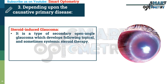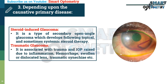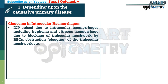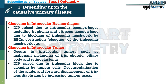Steroid-induced glaucoma — a type of secondary open angle glaucoma which develops following topical and sometimes systemic steroid therapy. Traumatic glaucoma — associated with trauma and IOP raised due to inflammation, hemorrhage, swollen or dislocated lens, traumatic synechiae, etc. Glaucoma in intraocular hemorrhages — IOP raised due to intraocular hemorrhages including hyphema and vitreous hemorrhage, due to blockage of the trabecular meshwork by red blood cells and clogging of the trabecular meshwork. Glaucoma in intraocular tumors — occurs in intraocular tumors such as malignant melanoma of the iris, choroid, ciliary body, and retinoblastoma. IOP is raised due to trabecular block by tumor cells, neovascularization of the angle, and forward displacement of the iris-lens diaphragm by increasing tumor mass.